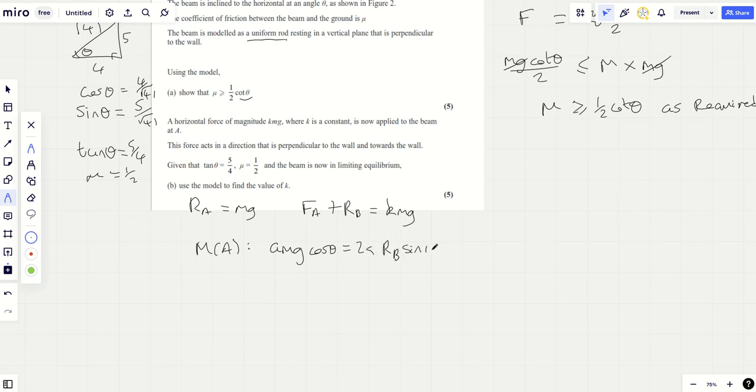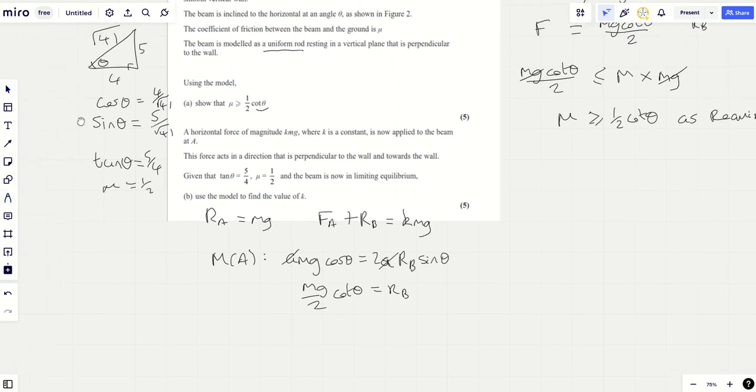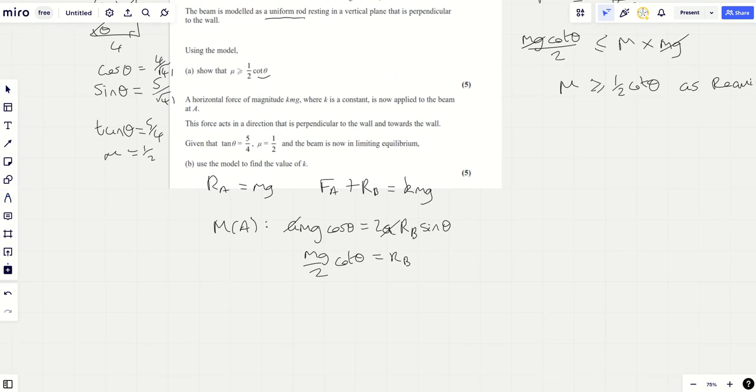So let's write that down. And so cross out the A's, we're going to be able to find that MG over two cot theta is RB. But remember that as tan theta is five quarters, cot theta is going to be the reciprocal of that four fifths. So you've got MG over two times by four fifths. Let's cancel that down. Do your canceling. Two MG over five is RB. Cool.